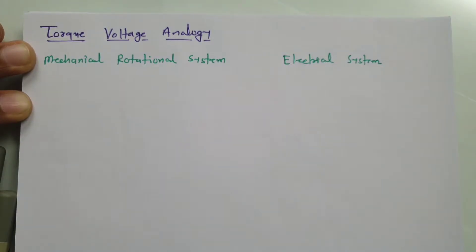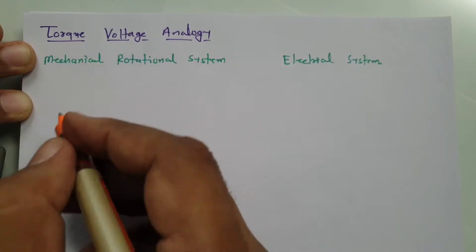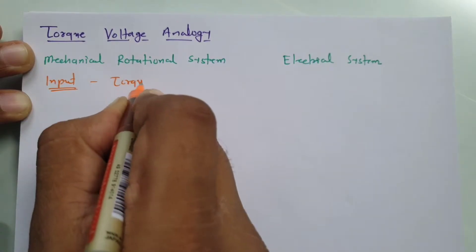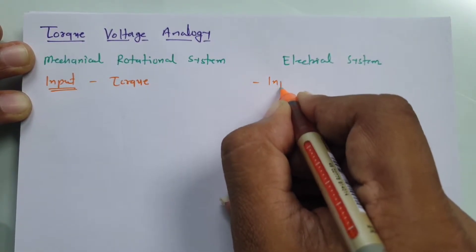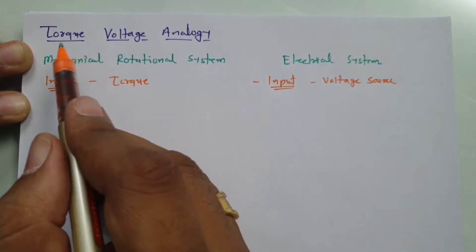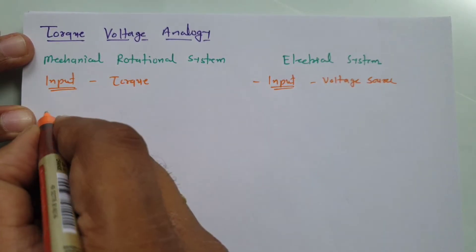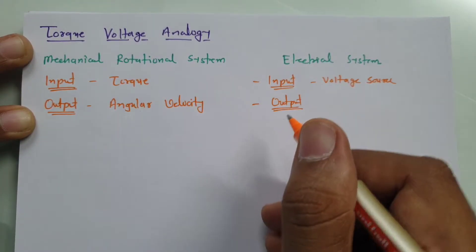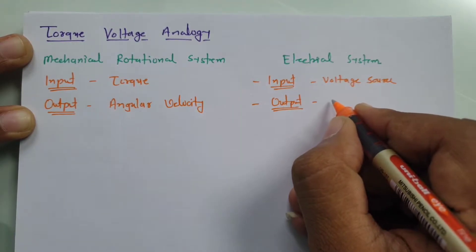When we talk about the analogy between torque and voltage, in the mechanical rotational system our input will be torque, and in the electrical system our input will be a voltage source. When we do torque-voltage analogy, in the mechanical rotational system our output will be angular velocity, and in the electrical system our output will be the current passing through the element.